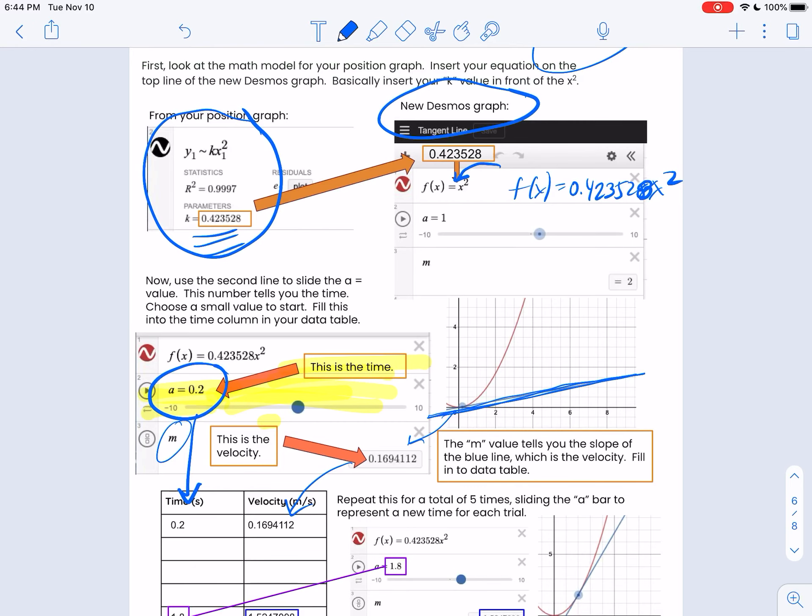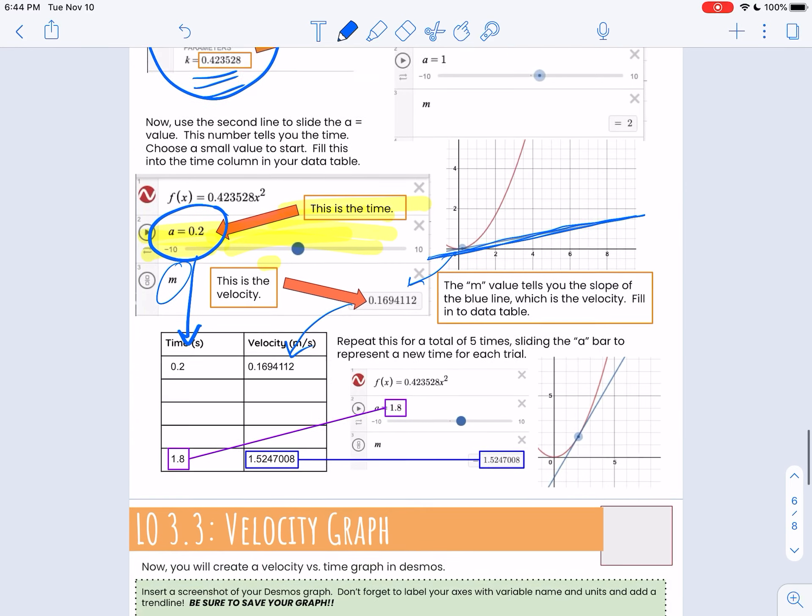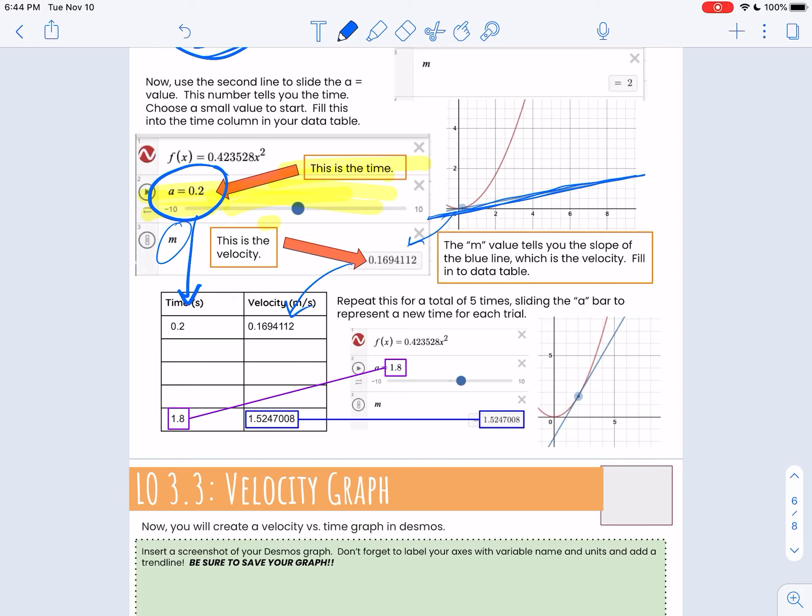So you're going to do that like four or five times. So if you keep sliding that, that's going to be your time, and then that slope is going to tell you this. Then this becomes the table that you make your velocity graph out of on a new Desmos graph.